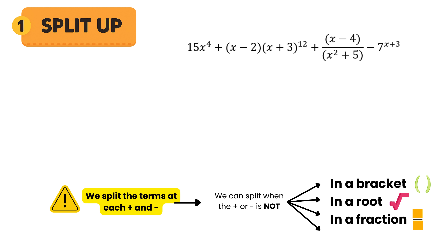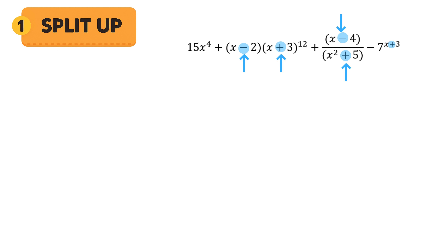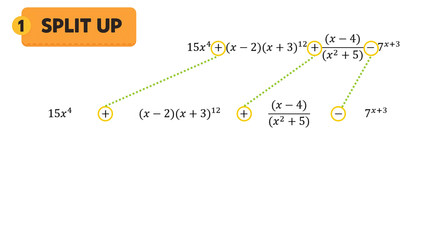Look at our example. We can see that at certain plus and minus signs we cannot split, because they are either inside brackets, part of a fraction, or inside an exponent. But at the following plus and minus signs we can split, because they're not part of brackets, roots, fractions, or exponents. So at these signs we split the expression.